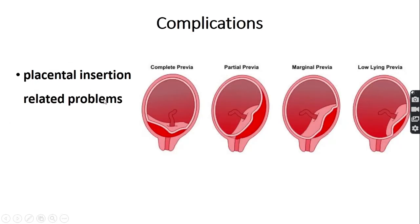Placental insertion-related abnormalities may occur in monochorionic diamniotic twin pregnancy, including complete placenta previa, partial placenta previa, marginal placenta previa, and low-lying placenta.